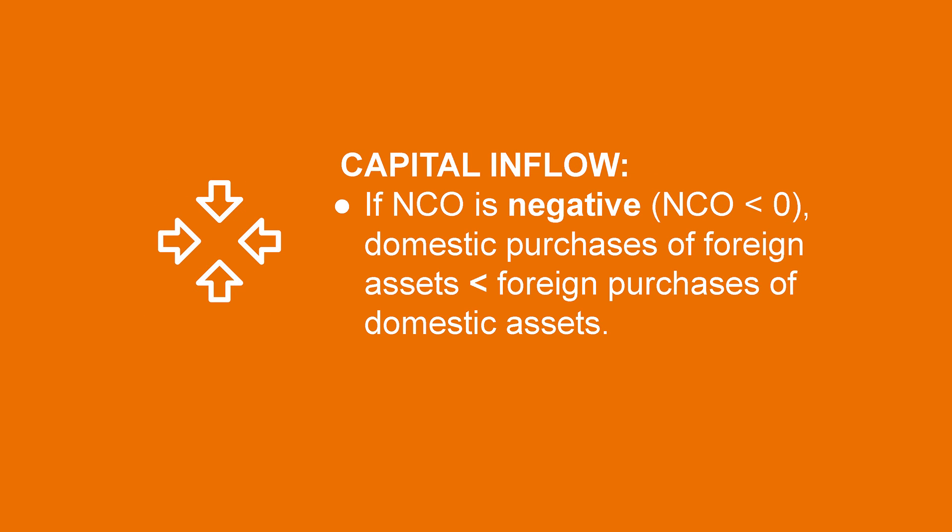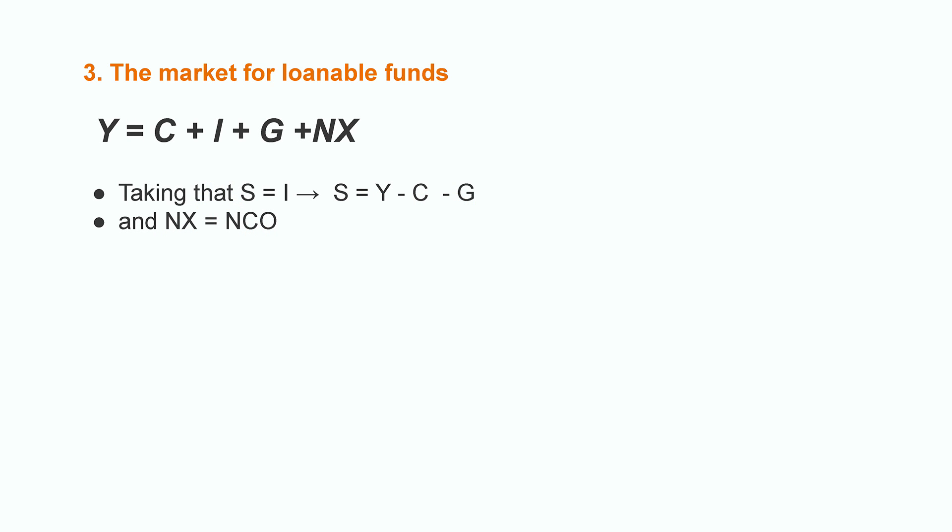If NCO is negative, then this country is receiving more foreign capital, and this is called capital inflow. In order to see how the market for loanable funds operates, we have to go back to the GDP equation and add two accounting identities. First, in a closed economy, local savings generate local investment — savings equal total income minus consumption and public spending. Second, net exports are equal to net capital outflow or net foreign investment. We arrive at the result that income minus consumption and public spending, which equals savings, equals investment plus net exports. Since net exports are the same as NCO, we can say that savings equal investment plus net capital outflow.